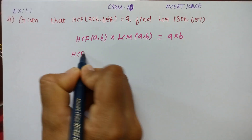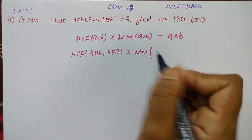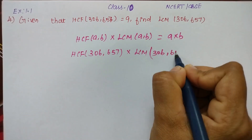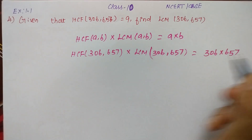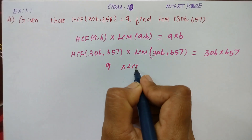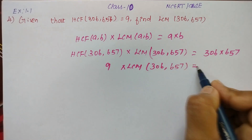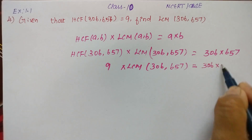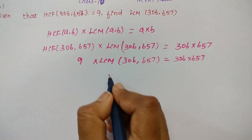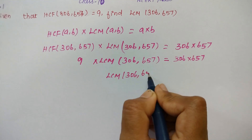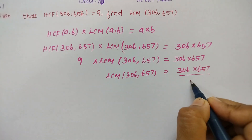So, HCF of 306, 657 into LCM of 306, 657 equals 306 into 657. Here, HCF is given as 9, so: 9 into LCM of 306, 657 equals 306 into 657. We move the 9 to the right-hand side, so LCM of 306, 657 equals 306 into 657 divided by 9.